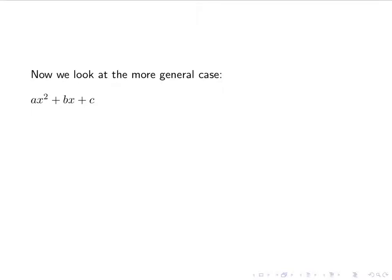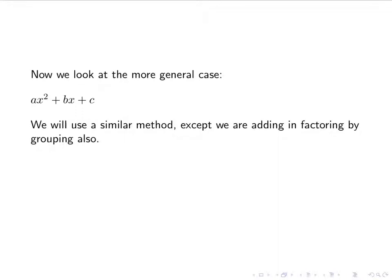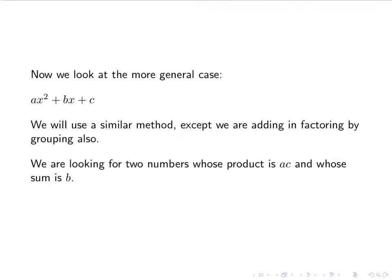Now we're going to look at the more general case where the leading coefficient isn't 1: ax squared plus bx plus c. We're going to use a similar method, but we'll also be using factoring by grouping. The key difference is we look for two numbers whose product is a times c — not just c — and whose sum is still b.